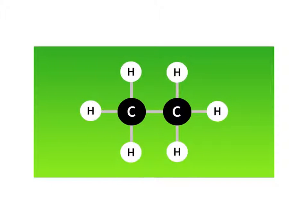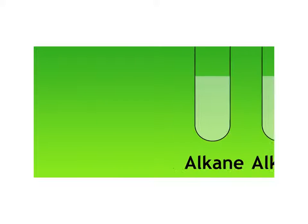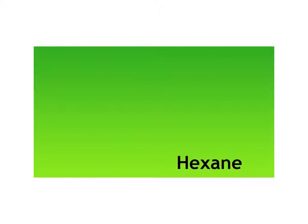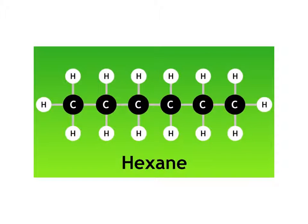There are no double bonds and so no addition reaction can take place. Therefore, no more atoms can be added to the molecule. Both the alkanes and alkenes are colourless. For example, hexane and hexene are both colourless liquids. Their displayed formula looks like this.